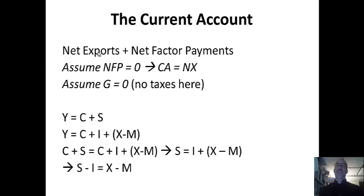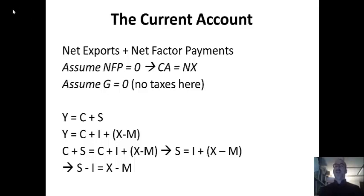What that is called is the current account — a measure of international borrowing. Sometimes in a macro context you can call it net exports, which is exports minus imports, but it's not quite identical. There's another item called net factor payments, which are payments to and from other countries for the use of factors. For example, if Apple designs the iPhone in America but produces it in China, they earn profits in China — those could be Chinese exports — but the net factor payments go to the United States. So the current account is different from net exports for the same reason that GDP and GNP are different.